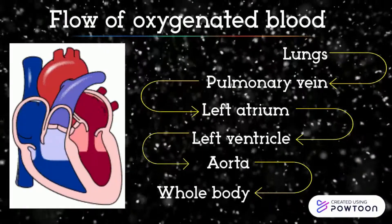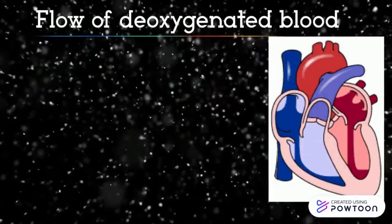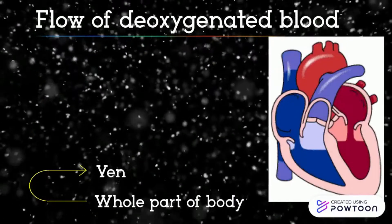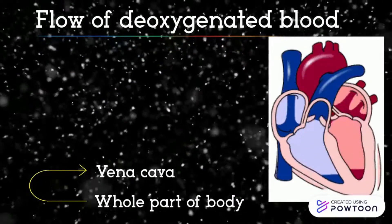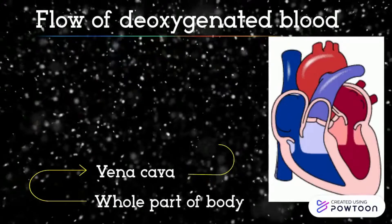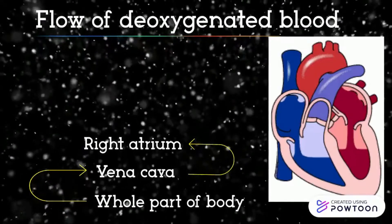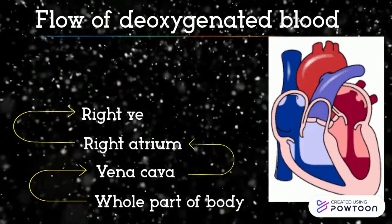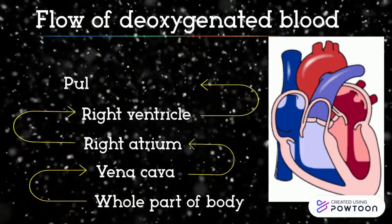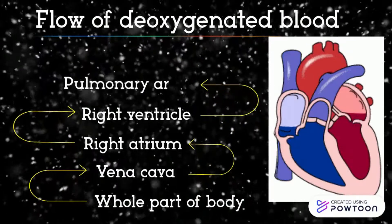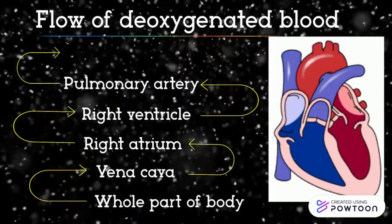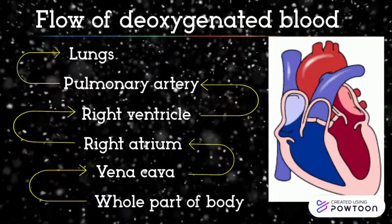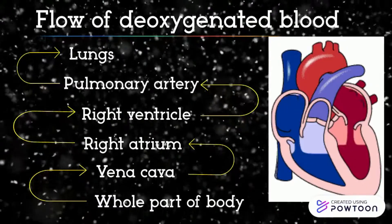Flow of Deoxygenated Blood: Blood flows from the whole body to the vena cava, enters the right atrium, pumps to the right ventricle, and pumps to the pulmonary artery to be transported to the lungs.